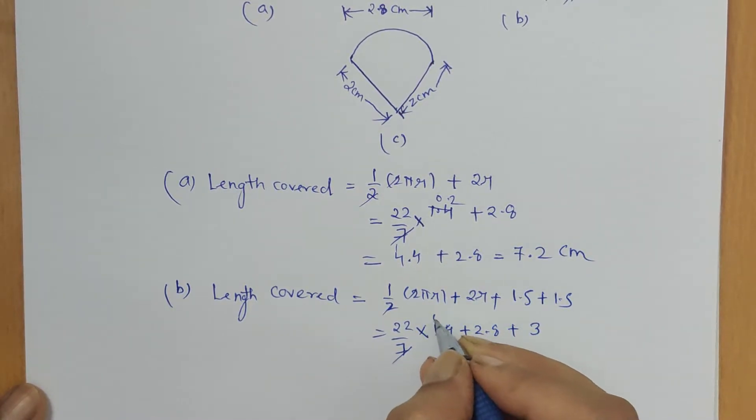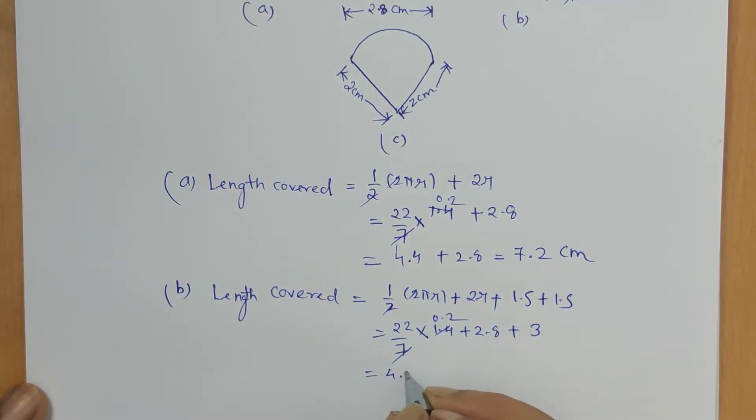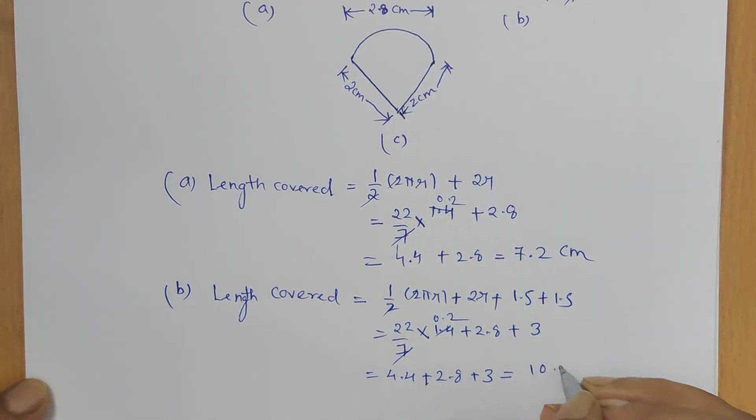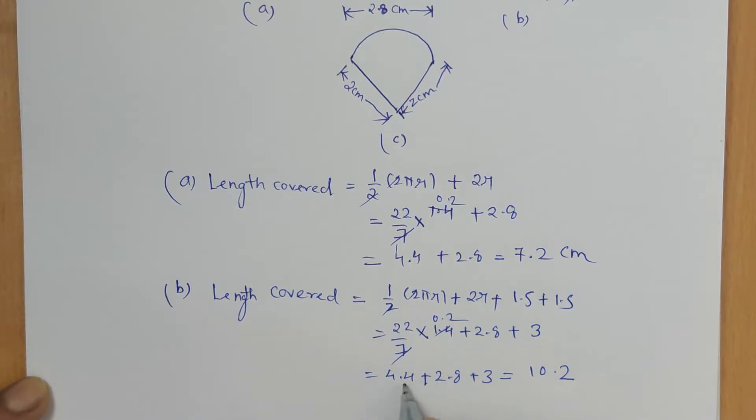So simply calculate it: this is 22/7, and the radius is 1.4 plus 2.8 plus this is 3. So 7 into 14 is 4.4 plus 2.8 plus 3, then added gives... 8 plus 4 is 12, so 2 is here and then decimal point, 4 plus 1 is 5, 6, 7 plus 3 is 10. So 10.2 centimeter is the length covered by the ant for food piece B.